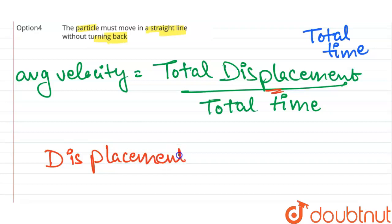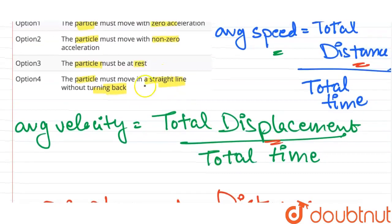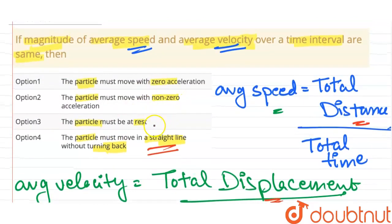And this is only possible when the particle is moving in a straight line. So the only necessary condition for the particle to have distance equal to displacement will be when the particle is in a straight line.